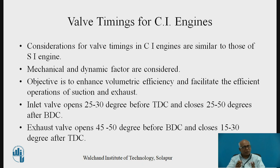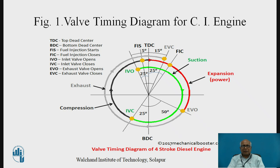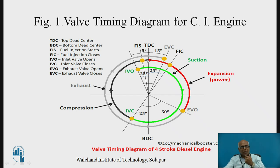We are not going into detail because we have already discussed this last time. The valve timing diagram looks like this: the inlet valve opens earlier so suction starts earlier, and continues from TDC down to BDC. Then compression starts, which ends at top dead center. By that time the inlet valve and exhaust valve are closed, and only then comes the expansion.